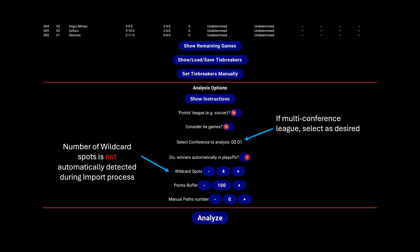Also, the number of wildcard spots will not be automatically detected during the import process, so it may need to be manually selected — and that number will be the number of wildcard spots per conference if the league is multi-conference. Otherwise, the other options and processes are fully described on the website.